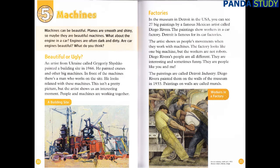In the museum in Detroit in the USA, you can see 27 big paintings by a famous Mexican artist called Diego Rivera. The paintings show workers in a car factory — Detroit is famous for its car factories. The artist shows us people's movements when they work with machines. The factory looks like one big machine, but the workers are not robots. Diego Rivera's people are all different — they are interesting and sometimes funny. The paintings are called Detroit Industry, and Diego Rivera painted them on the walls of the museum in 1933. Paintings on walls are called murals.